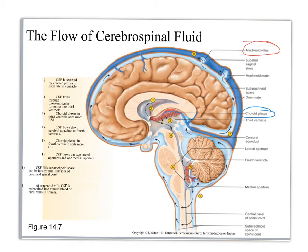This is an important pathway. Anytime we have a pathway in anatomy and physiology, you want to pay attention to the pathway of flow and remember what direction it's going. Let's look at the choroid plexus a little bit closer.